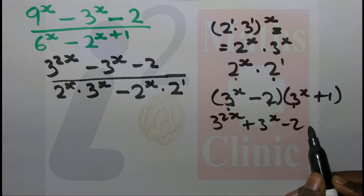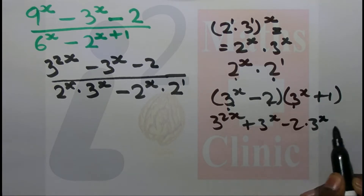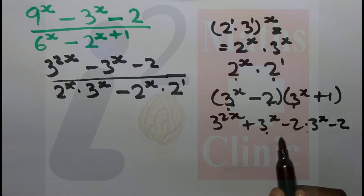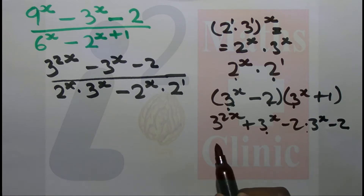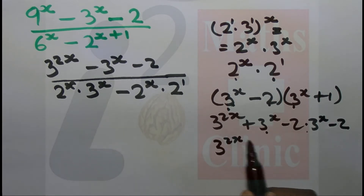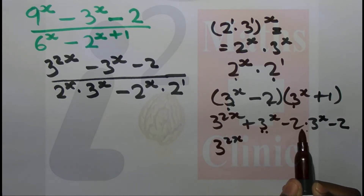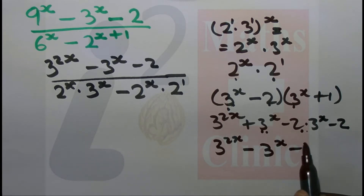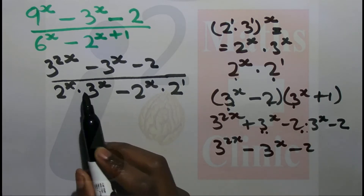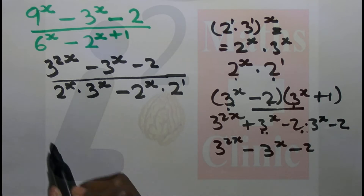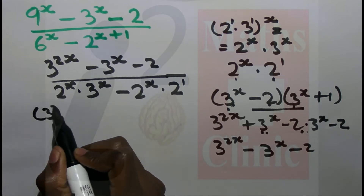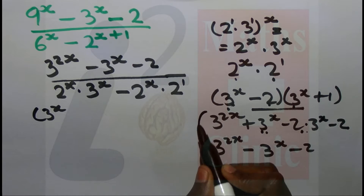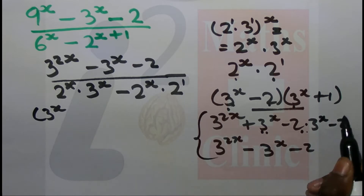4 to the x minus 2 to the x plus 1, then 2 to the x minus 3 to the x plus 2x times 1, minus 3 to the x minus 2. So if you factorize: 3 to the x minus 3 to the x minus, and you can factorize the expression in detail.